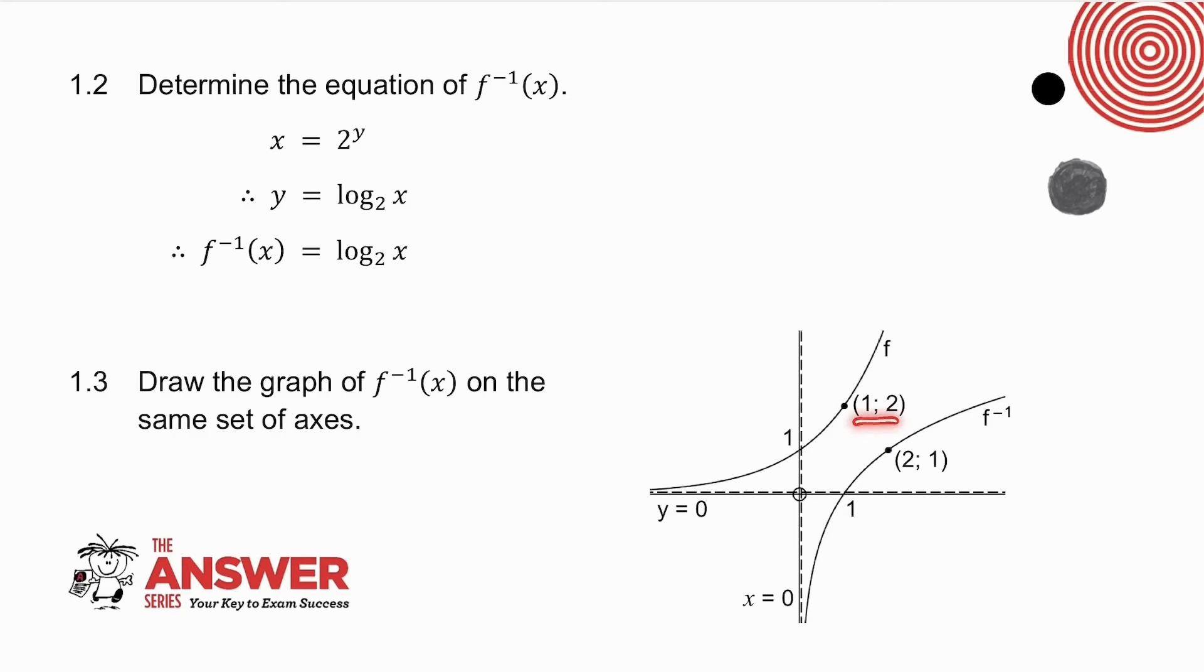The point 1, 2 becomes the point 2, 1, because f and f to the minus 1 are reflections in the line y equals x. So there's my graph of f to the minus 1 of x.